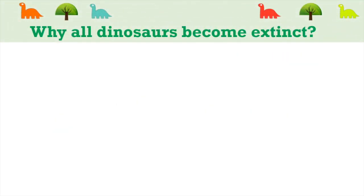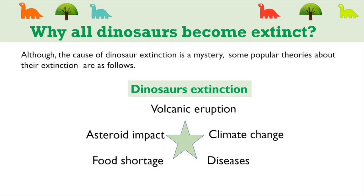Now the big question in everybody's mind: why did all these dinosaurs become extinct? Although the cause of dinosaur extinction is a mystery, some popular theories about their extinction are as follows. These theories are based on volcanic eruption, asteroid impact, climate change, food shortage, and diseases.